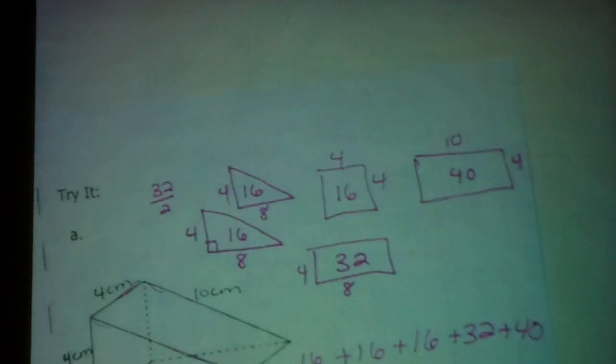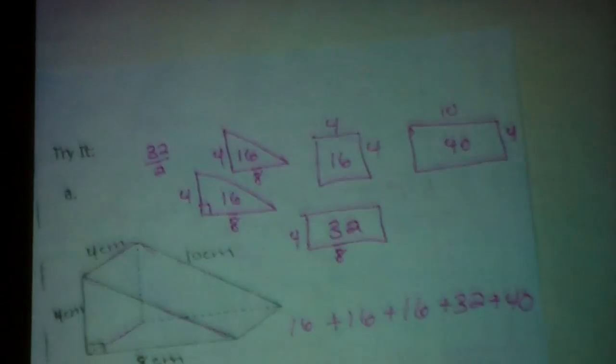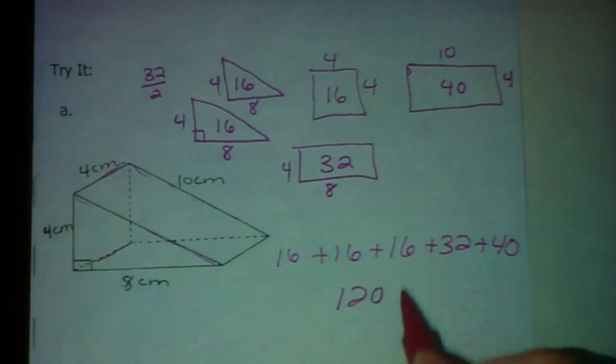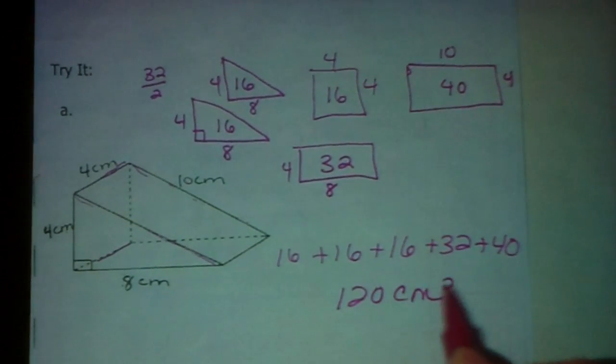Add them all up: 16 plus 16 plus 16 plus 16 plus 32 plus 40. You should end up with 120 centimeters squared.